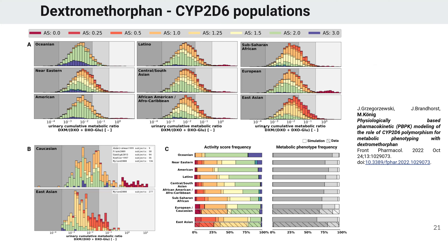We took this a step further and looked at the distribution of these genetic variants in populations, asking whether different populations show different distributions measured by this urinary ratio. You could see that in the European population we predict a lot of poor metabolizers, whereas East Asians basically shouldn't have any poor metabolizer phenotypes.